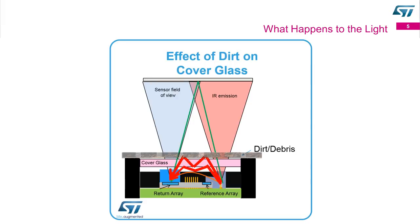Getting into the issue of a dirty environment — this is showing a cross-section of our part in a typical system. You do need a cover glass with our device to protect it from dirt and wear and tear. The issue is that a photon should travel right through the glass, hit the target, and come back. But in a dirty environment, the photon can bounce within the glass or hit the dirt and bounce back to our receiver, causing a very short distance reading instead of the actual target distance.